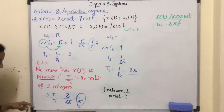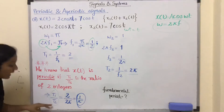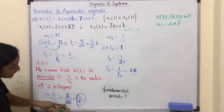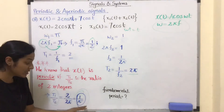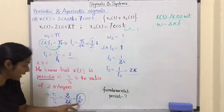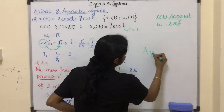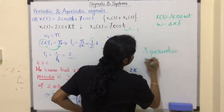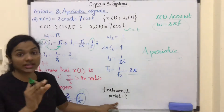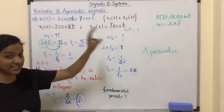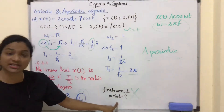Taking the ratio T1/T2 = 2/(2π) = 1/π. Since π is not an integer, this is not a ratio of two integers. Therefore, this signal is aperiodic — there is no periodic format for this signal, and the concept of fundamental time period has no significance here.